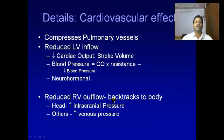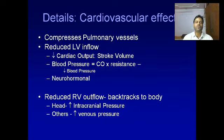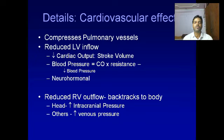In summary, the cardiovascular effects include: compression of pulmonary vessels, reduced LV inflow, a decrease in cardiac output and stroke volume, and a decrease in blood pressure (since blood pressure equals cardiac output multiplied by resistance). There are also neurohumoral effects. Reduced RV outflow backs up to the body — in the head this causes increased intracranial pressure, and elsewhere there is an increase in venous pressure.